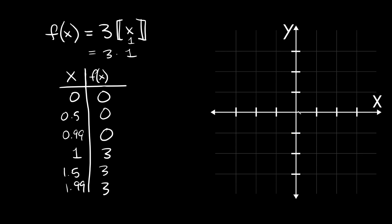Plotting this: starting at (0,0) with a closed circle, the step stays flat along y=0 until we reach x=1. At x=1 there's an open circle and a jump all the way up to y=3 — that's three units up. We place a closed circle at (1,3). The step length is still 1 unit, so going back in the negative direction we go down 1 unit in y and over 1 in x, repeating the same pattern.